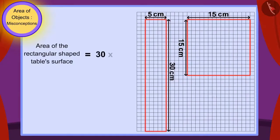There are 150 squares in the surface of the rectangle-shaped table. Or, the area of the rectangular table surface is 150 square centimeters.